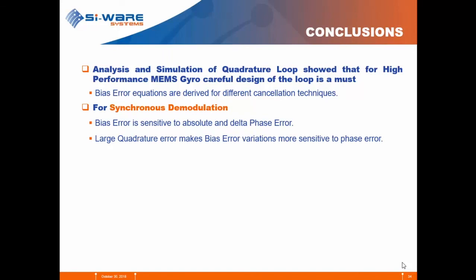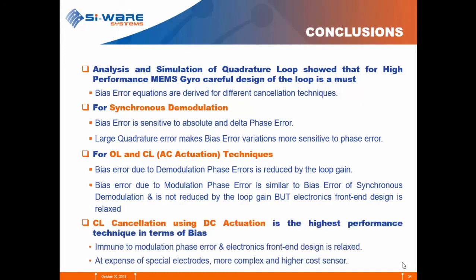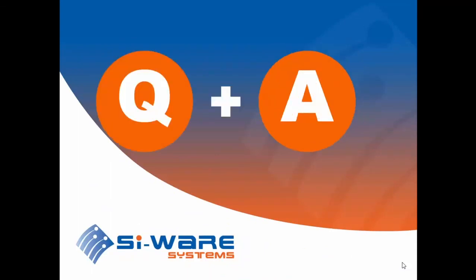To conclude: for synchronous demodulation, bias error is very sensitive to absolute and delta phase error, and large quadrature error makes bias variations even worse. For open loop and closed loop AC activation techniques, we get the benefit of relaxing the electronics front end design, but due to the modulation phase error, similar bias error variations occur. For closed loop cancellation using DC activation, this is the highest performance technique — immune to modulation phase error with a relaxed electronics front end — at the expense of special electrodes and higher cost. Thank you, I'll take your questions.